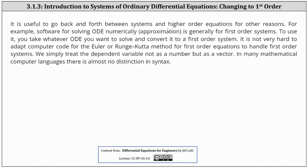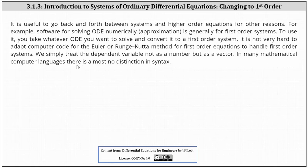It is useful to go back and forth between systems and higher-order equations for other reasons. For example, software for solving ODEs numerically is generally for first-order systems. To use it, we take whatever ODE we want to solve and convert it to a first-order system. It is not very hard to adapt computer code for the Euler or Runge-Kutta method for first-order equations to handle first-order systems — we simply treat the dependent variable not as a number but as a vector. In many mathematical computer languages, there is almost no distinction in syntax.